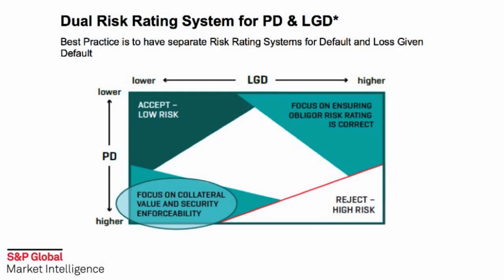The dual risk rating system that separates PD and LGD assessments initially emerged because a single risk rating may not support all of the functions that require credit risk evaluations. Borrower risk ratings typically support deal structuring and administration, while facility risk ratings support allowance for loan and lease losses, or ALLL, and also capital estimates.